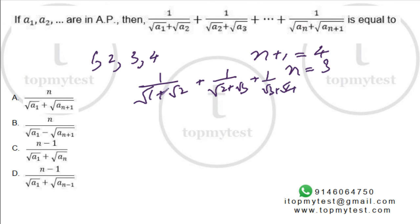If you rationalize the denominator, 1 divided by root A plus root B is the same as multiplying and dividing by root A minus root B.